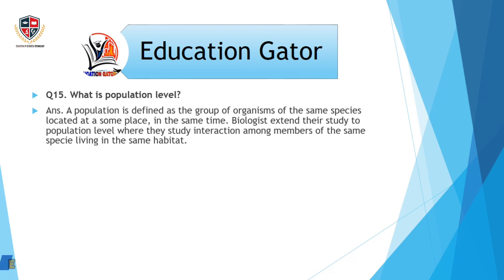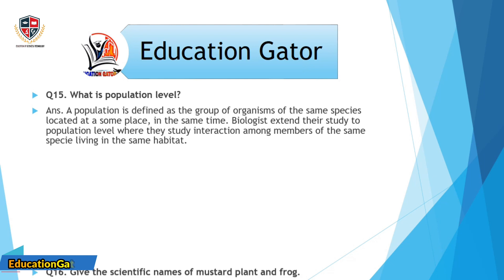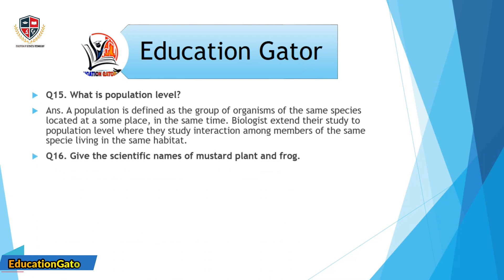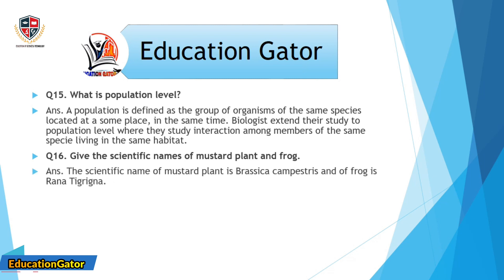Question number 15: What is population level? Ans. A population is defined as the group of organisms of the same species located at the same place at the same time. Biologists extend their study to population level where they study interaction among members of the same species living in the same habitat.